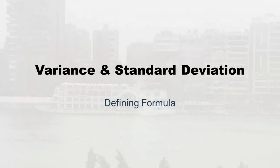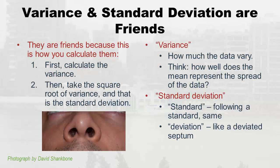Now we get into what we really use in statistics. You'll sometimes see ranges stated in articles — they usually state the minimum and maximum. But variance and standard deviation are what we really live on in statistics for measures of variation. You're probably wondering why I'm talking about them together — it's because they're friends. The variance formula is a big formula, and once you get through it and have the variance, all you have to do to get the standard deviation is take the square root of the variance.